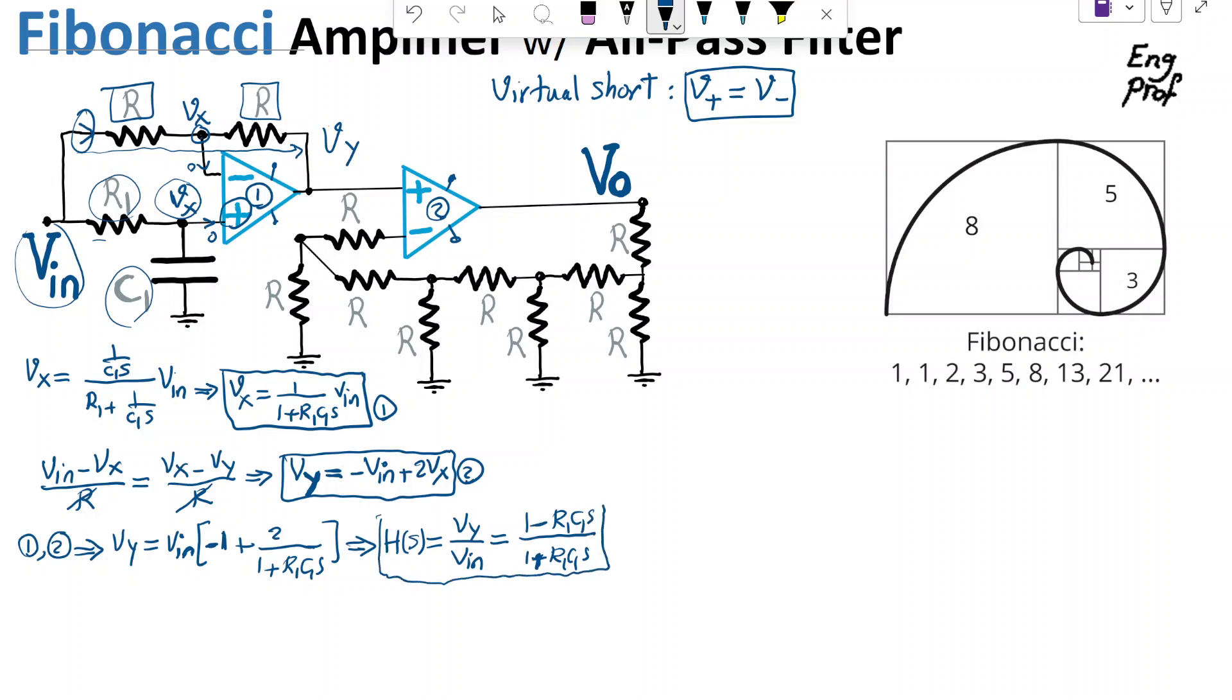This is the voltage transfer function of an all-pass filter. As S goes to 0, you can see that it becomes 1 over 1, which means gain of 1 for DC frequencies. As S goes to infinity, which means j omega going to infinity, super high frequency, the whole thing asymptotically goes to negative R1 C1 S over R1 C1 S, which becomes negative 1. So gain is always 1, except for at DC, phase is 0, but at super high frequency, since the sign becomes negative 1, effectively, then the phase is 180 degree. Now that we found that the first portion is all-pass, let's deal with the second portion, which is the Fibonacci amplifier portion. From Vy, the midpoint to the output.